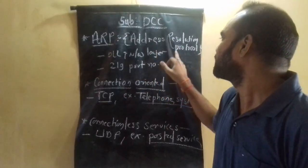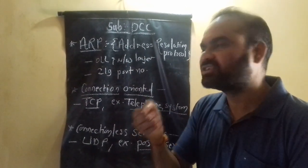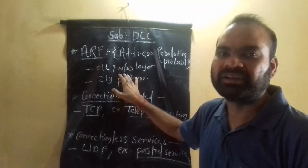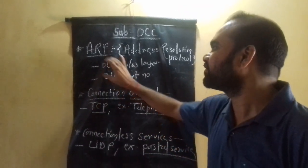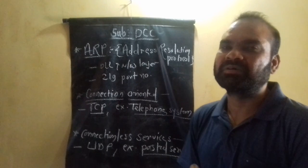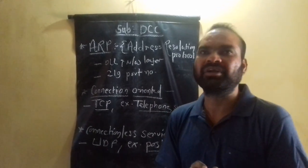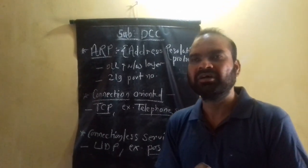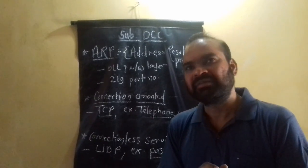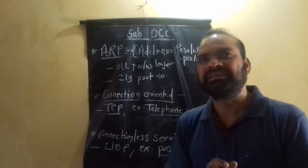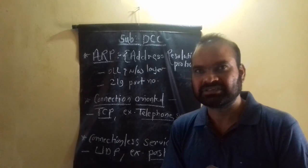ARP stands for Address Resolution Protocol. ARP is available in the data link layer and network layer. ARP protocols work in networking systems, managing and controlling IP addresses within the network.